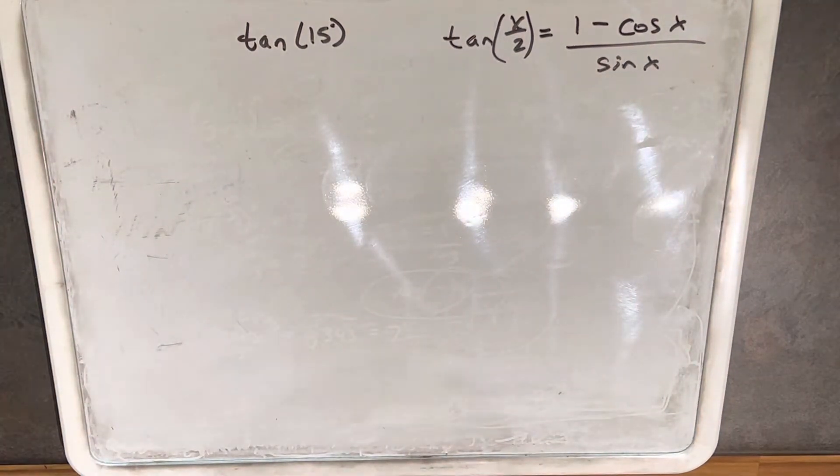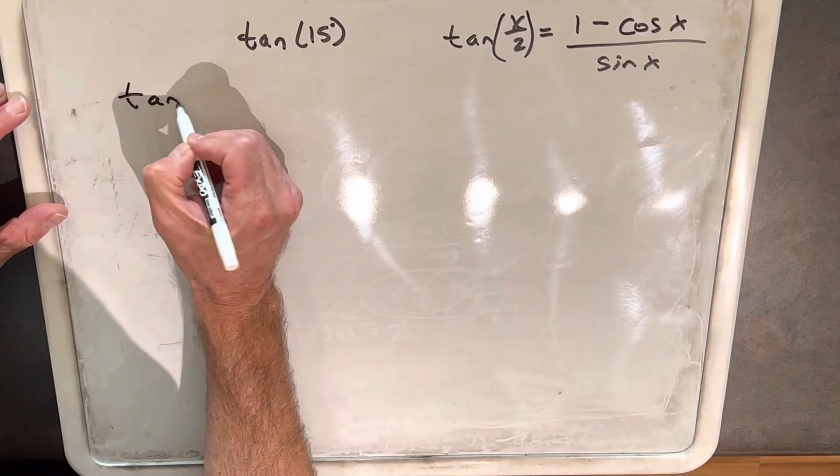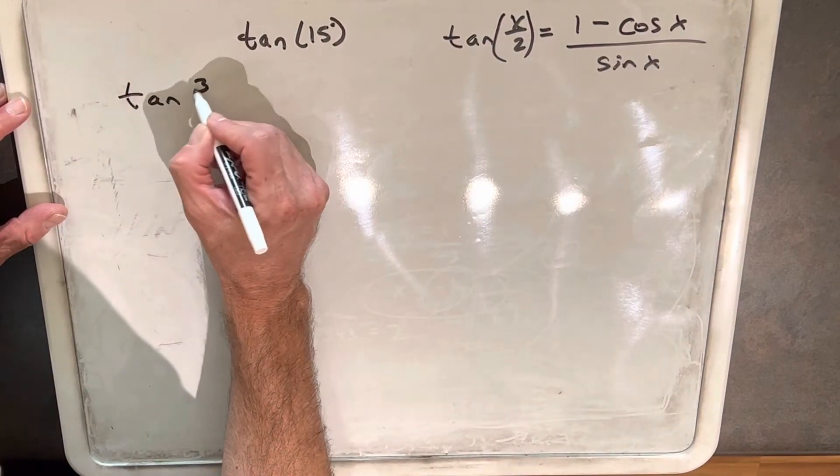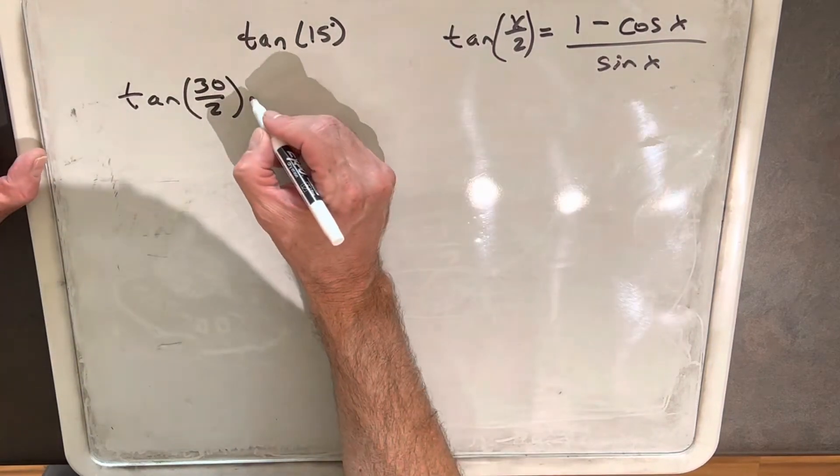Now, what we're going to do is, for our x value, we're going to use 30. So if we go back, we want 15, but we can rewrite 15 as 30 over 2. That's going to allow us to use this formula.